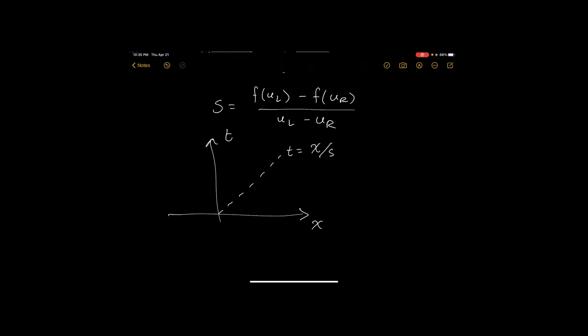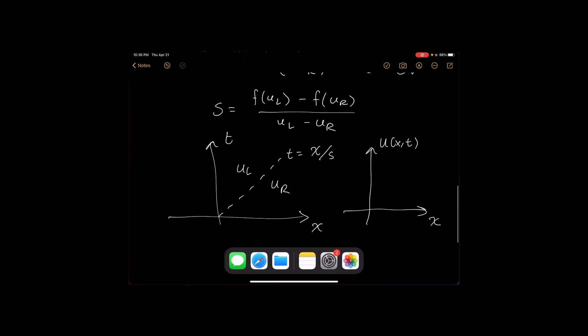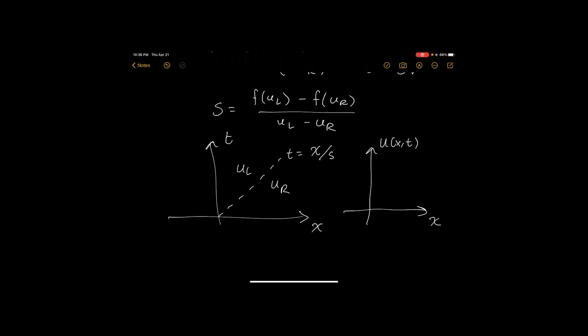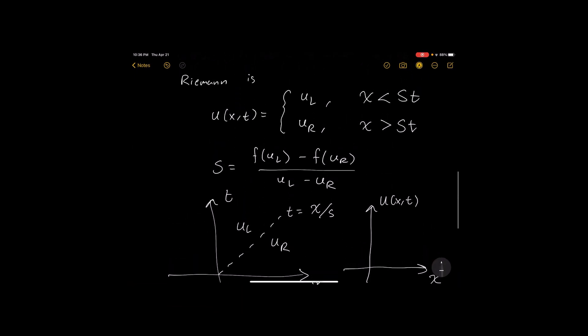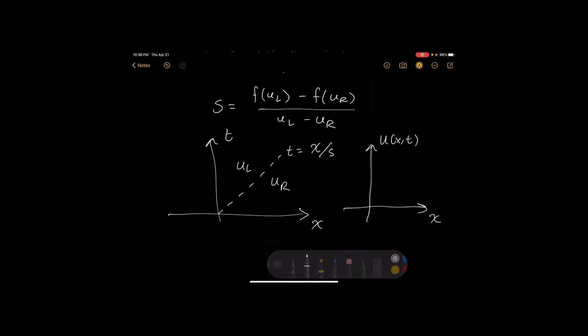And on the left here we have our left state and over here this is a right state. Okay, and so our solution if you're to draw it, so u(x,t), let's use a different color. So we'll draw it in blue. So our solution looks something like this.